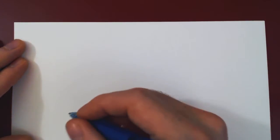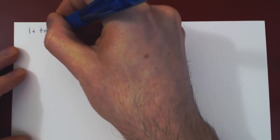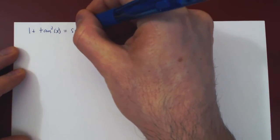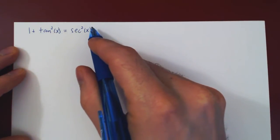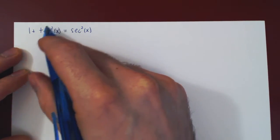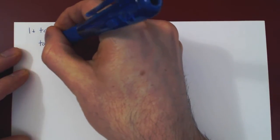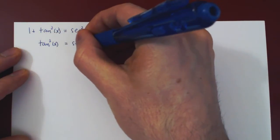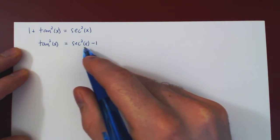In this video, we will consider trigonometric integrals involving tangent and secant of x. We need essentially three results. The first is that 1 plus tangent squared of x equals secant squared of x. This allows you to replace secant squared of x as a function of tangent squared. You could subtract 1 and write that tangent squared is secant squared minus 1, which allows you to replace a tangent squared by a function of secant of x.